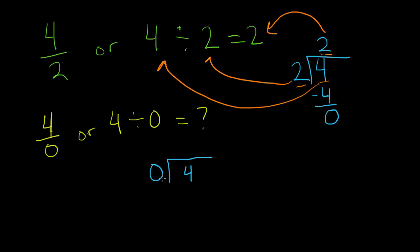Now, just like before, we want to find how many times does zero go into four. Well, you might be inclined to think it goes into it zero times, or it goes into it one time, or a million times, or however many times you want. Let's just look at the case where it equals zero. Let's say zero goes into four zero times.